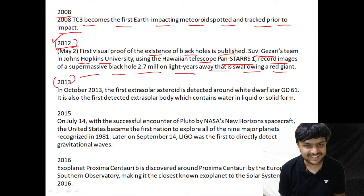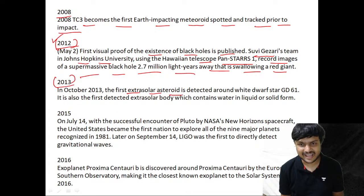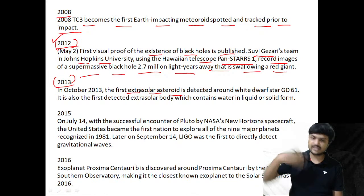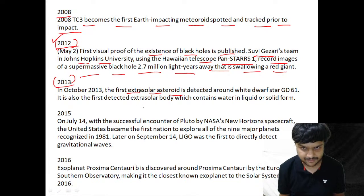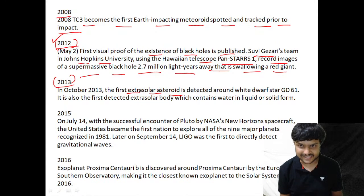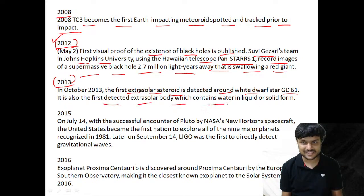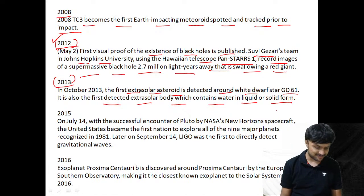In October 2013, the first extrasolar asteroid is detected around a white dwarf star called GD 61. It is the first detected extrasolar body which contains water in liquid or solid form.